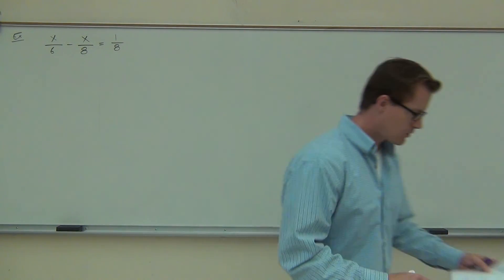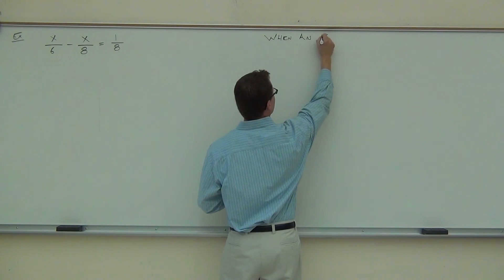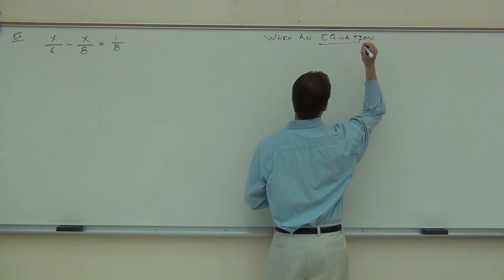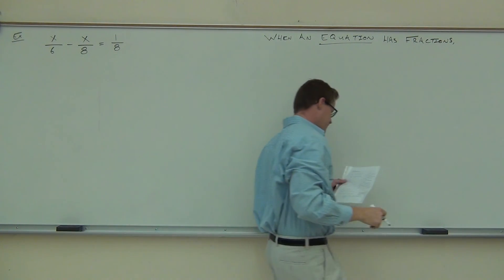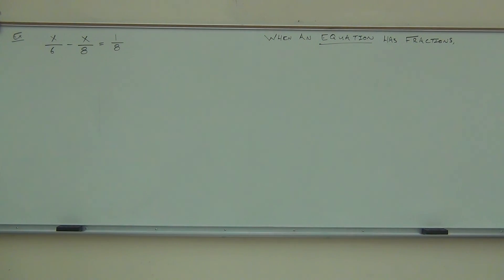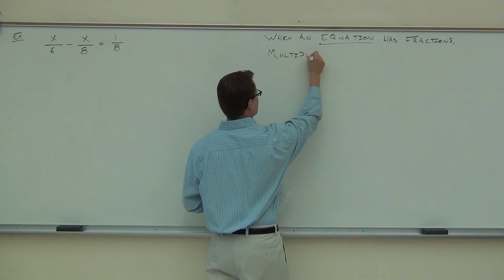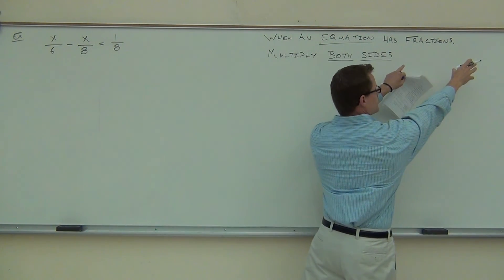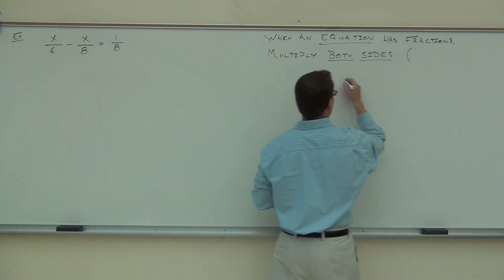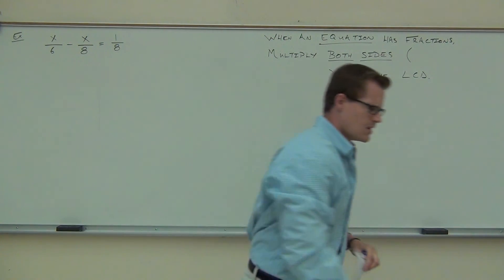Our goal here is when we have an equation that has fractions, what we're going to do is we're going to find the LCD. And we're going to multiply both sides of the numbers of an equation. We've got to do for one side, the other side as well. We're going to multiply both sides by the LCD.